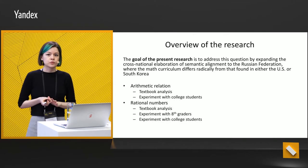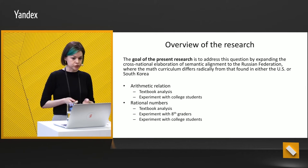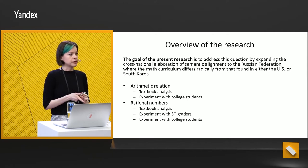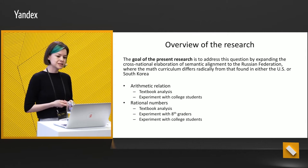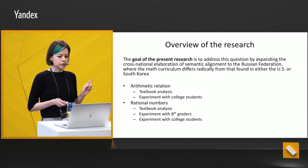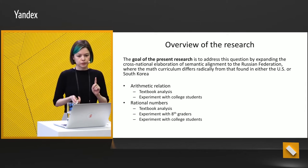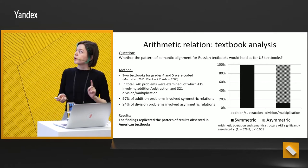So what have we done to answer our question? We wanted to know what happens in Russia with semantic alignment. Considering this question from a cross-national perspective allowed us to address the nature of semantic alignment. In our research, we addressed both arithmetic relations and rational numbers. We did textbook analyses for both cases and conducted three experiments — with college students, and with eighth graders in school.